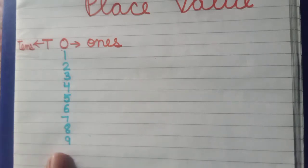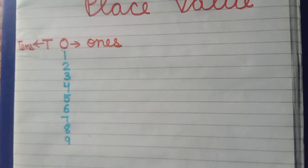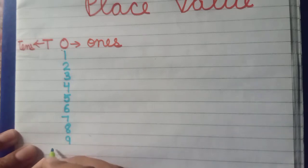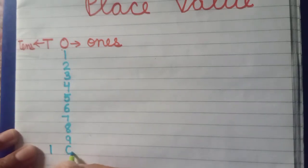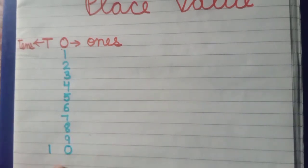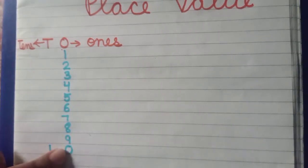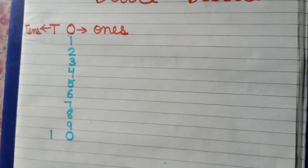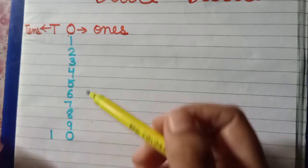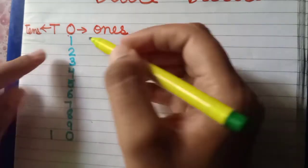Now tell me, if we will write 10 — so which number will we write on tens place? Agar hum 10 likhenge toh tens ke place pe kaise aayega? Look here. We always write 10 like this: zero on ones place and one on tens place. Hum hamesha ten kaise likhte hain — zero ones ke place par aur one tens ke place par.